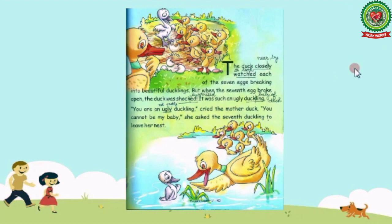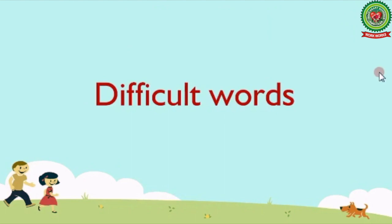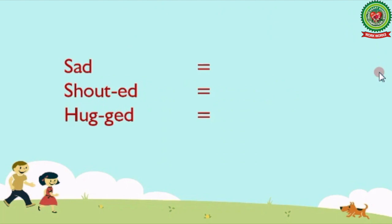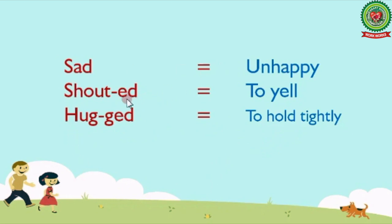Okay kids, now let's continue reading ahead, but before proceeding let us discuss some difficult words with their meanings. Our first word is 'sad', which means unhappy. Next word is 'shouted', which means to yell. Next word is 'hugged', which means to hold tightly. Let's revise once again: sad — unhappy; shouted — to yell; hugged — to hold tightly.